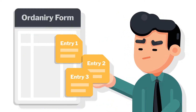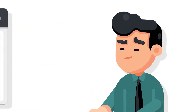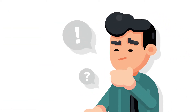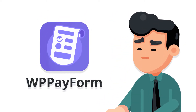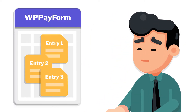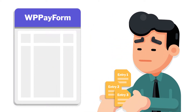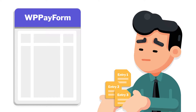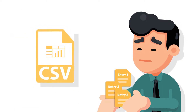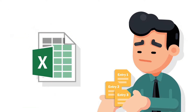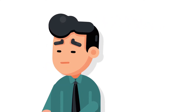Sometimes you might need to export the data from your forms and don't know how to do it. WP Payform lets you export form data in various formats like CSV, Excel file, JSON, and so on.